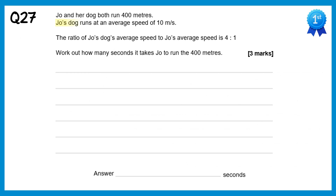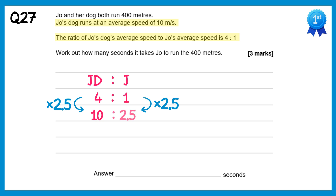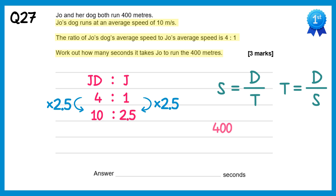Joe's dog runs at 10 m/s and the ratio of the dog's speed to Joe's speed is 4:1. To find Joe's speed: 10 ÷ 4 = 2.5, so Joe's speed is 2.5 m/s. Using time = distance ÷ speed: time = 400 ÷ 2.5 = 160 seconds.